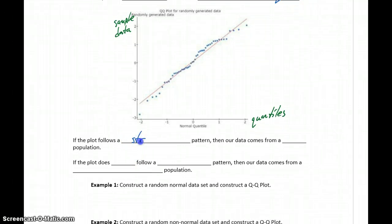If our data follows that straight line pattern that we see, then our data comes from a normal population. So essentially, we're saying on the x-axis we have our expected values, what we think we should see if it was perfectly normally distributed. And then on the y-axis, our sample data. So if those match up to be this straight line pattern exactly, then our data is coming from a normal population.